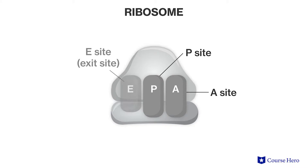The E site is the exit site where used tRNAs are released from the ribosome. Like transcription, translation occurs in three main steps.